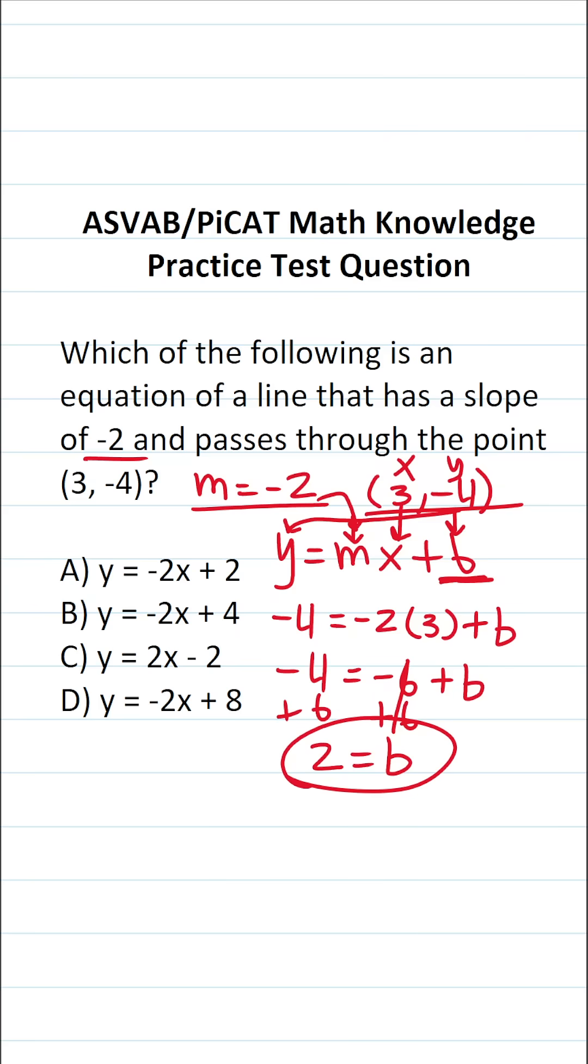So we know our y-intercept, our b, is 2. We know our slope is negative 2, and with that information, we now can write our equation of our line.